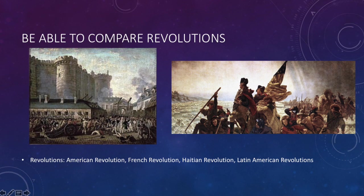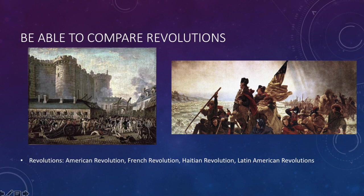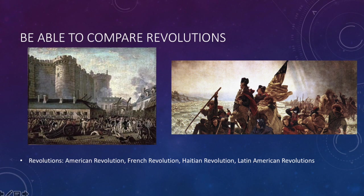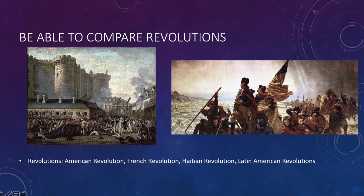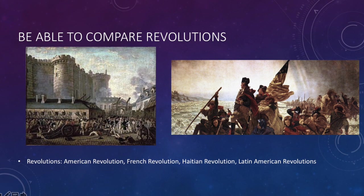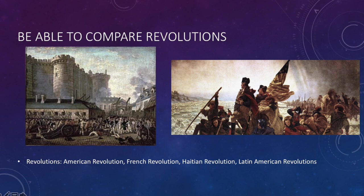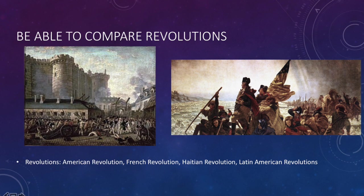I think you all have a general sense of the American Revolution, so I would go back and study the French Revolution. Know the three estates — what are they, their significance — what's the National Assembly, who is Maximilien Robespierre, what's the Reign of Terror, and what's the Committee of Public Safety. Also be able to contrast the American and French Revolutions, which your Princeton Review Guide does for you.